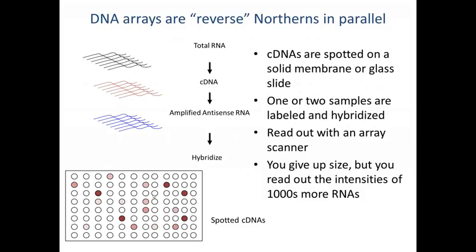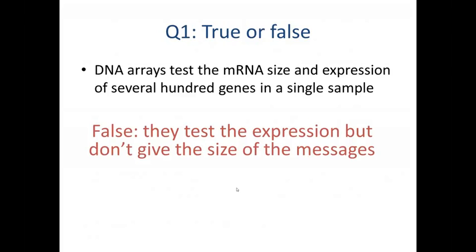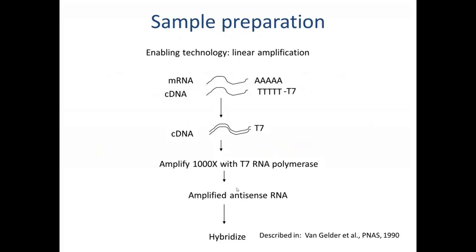You can think of DNA arrays as reverse northerns done in parallel. You start with total RNA, convert it to cDNA, amplify the antisense RNA, and hybridize to an array matrix where each well has a different cDNA already physically bound. The cDNAs are spotted on a solid membrane or glass slide, one or two samples are labeled and hybridized, and read out with an array scanner. What you do not get is size, but you do get intensities of hundreds or even thousands of different RNA species. Question: DNA arrays test mRNA size and expression of several hundred genes in a single sample — this is false; they test expression but don't give the size of the messages.